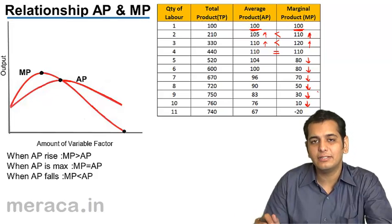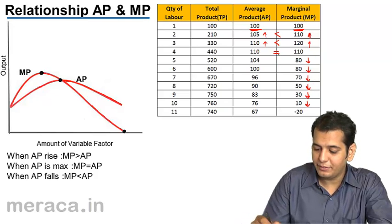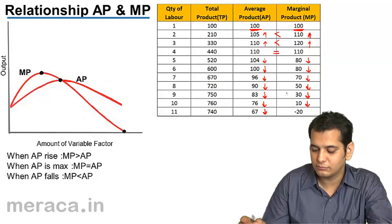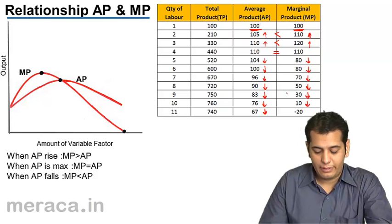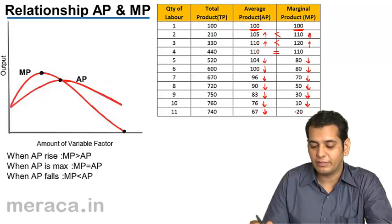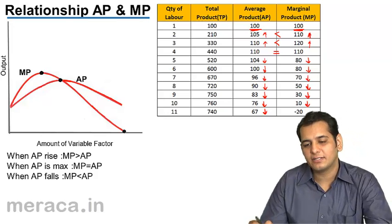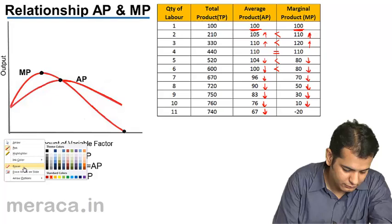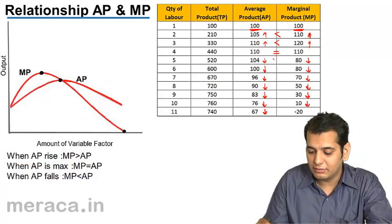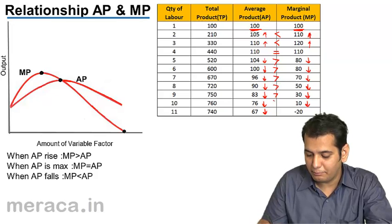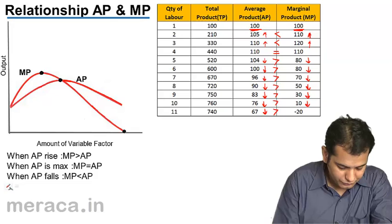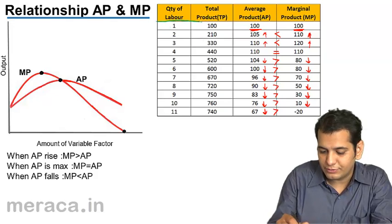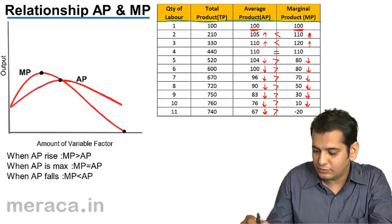MP generally starts to fall. And when MP is falling, AP also falls. And when this case is existing, we can see that AP is higher than MP now. At all levels, AP is greater than MP now. So, in the start, this is the level.